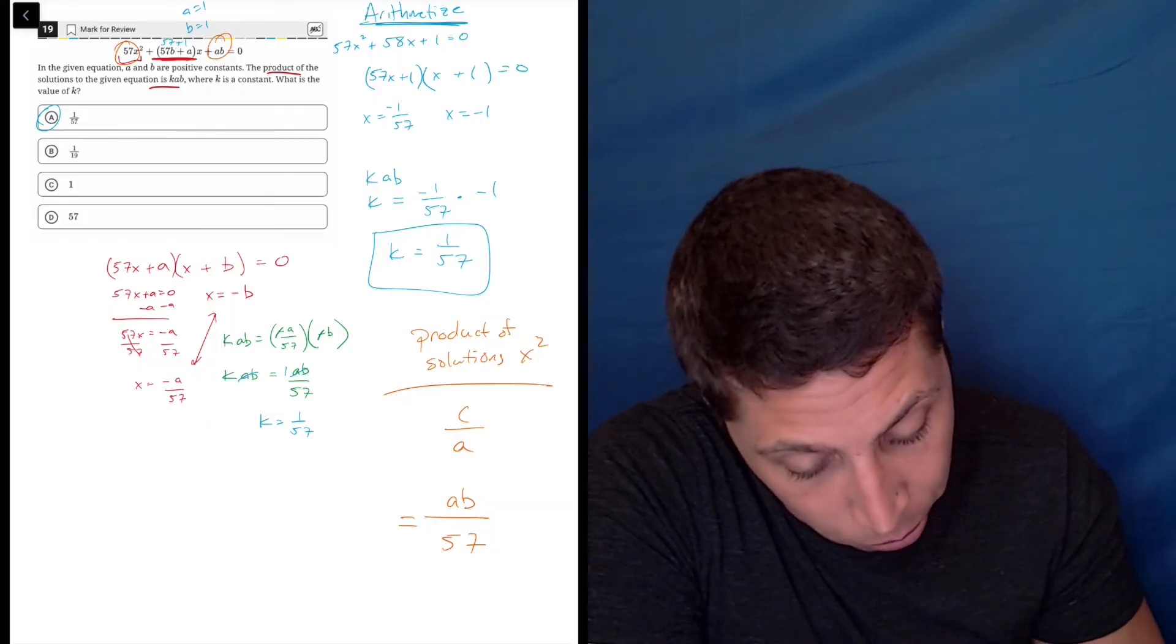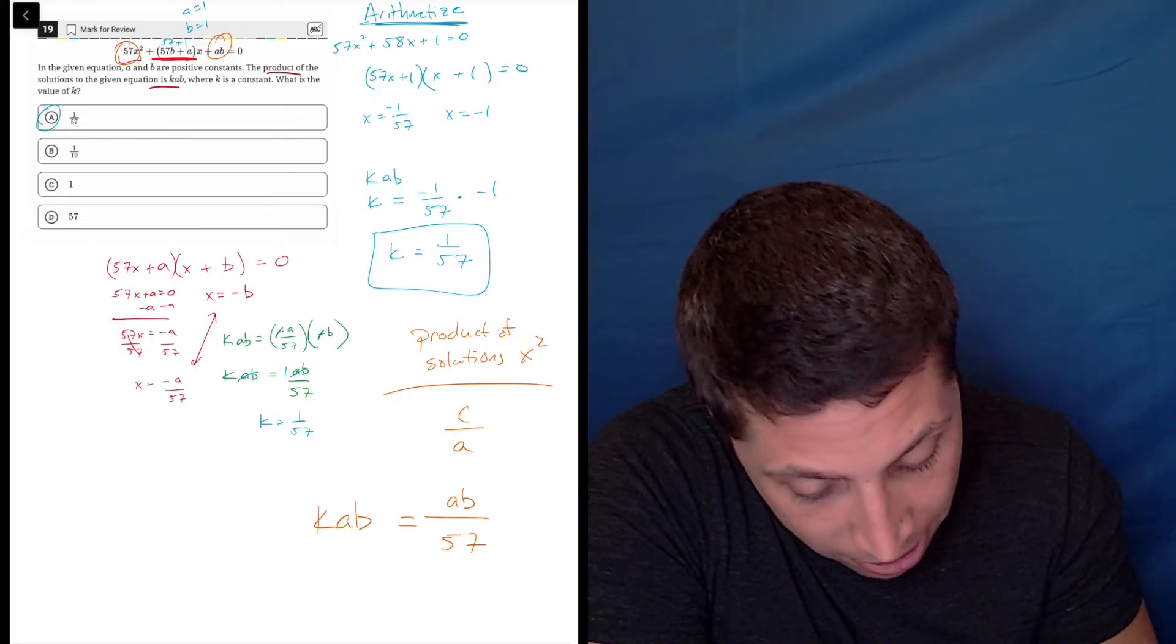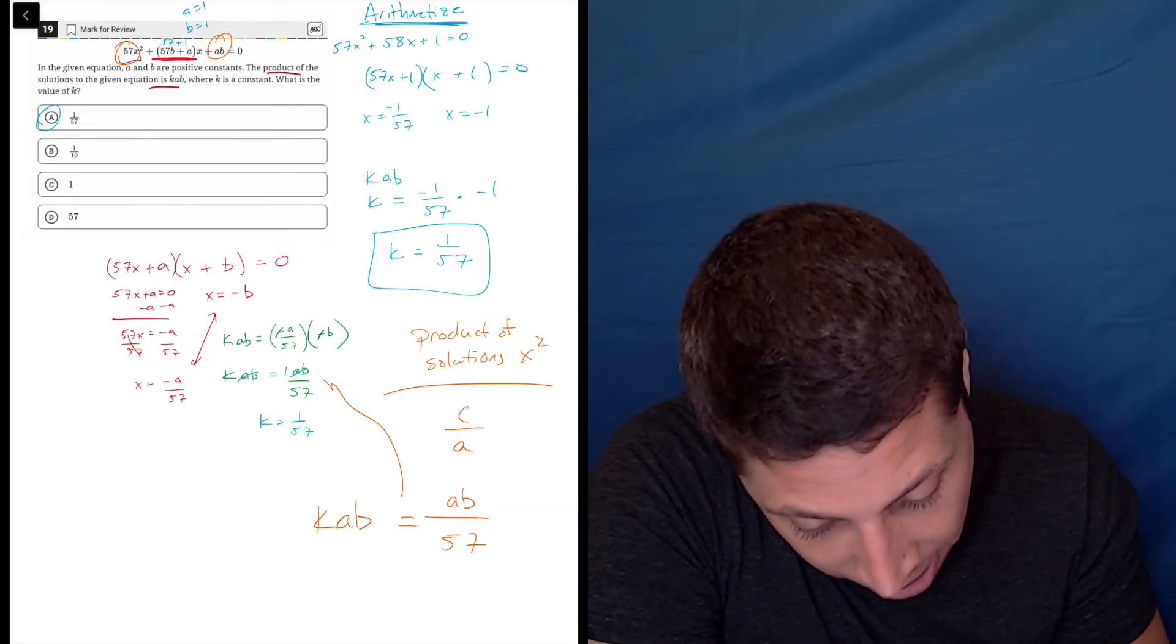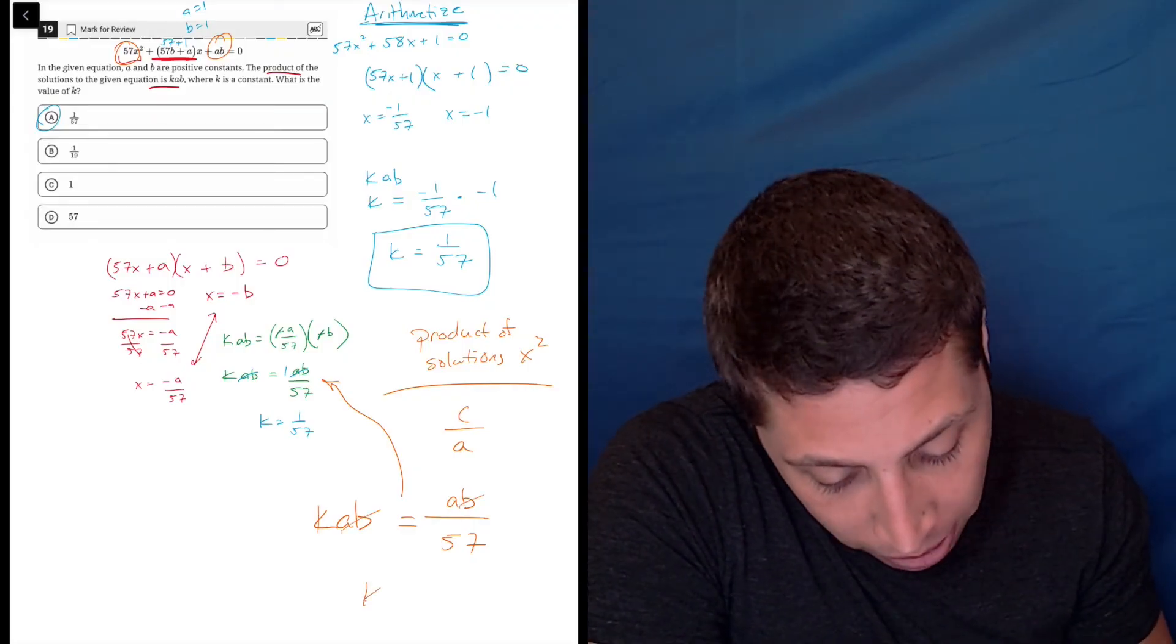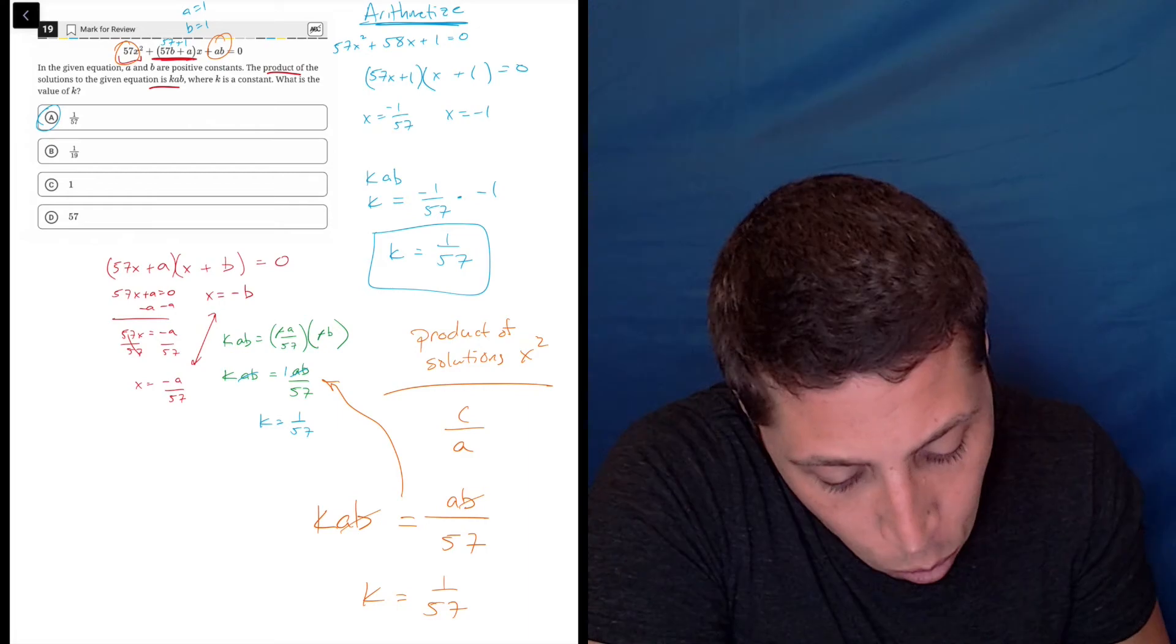And they told us, though, that that would be equal to k, a, b. And notice, that's exactly what I had at this point right here, right? So again, the a, b's would cancel and we'd be left with k is equal to one over 57.